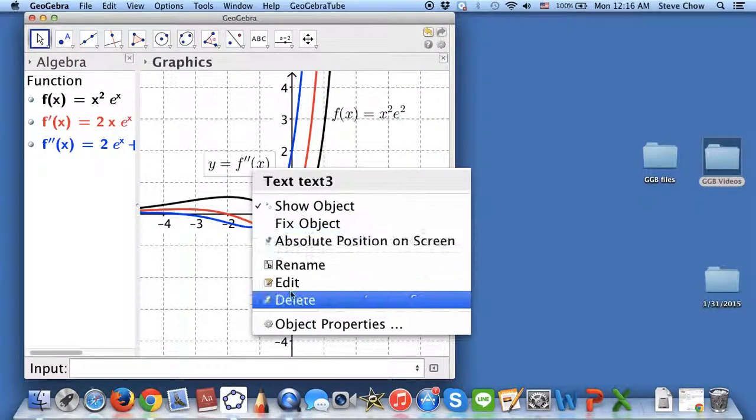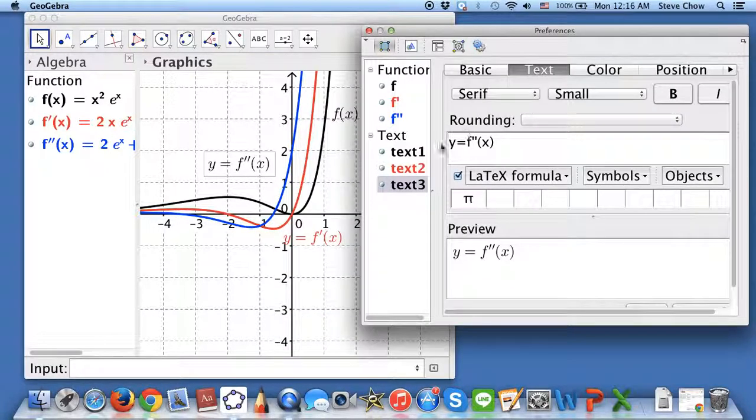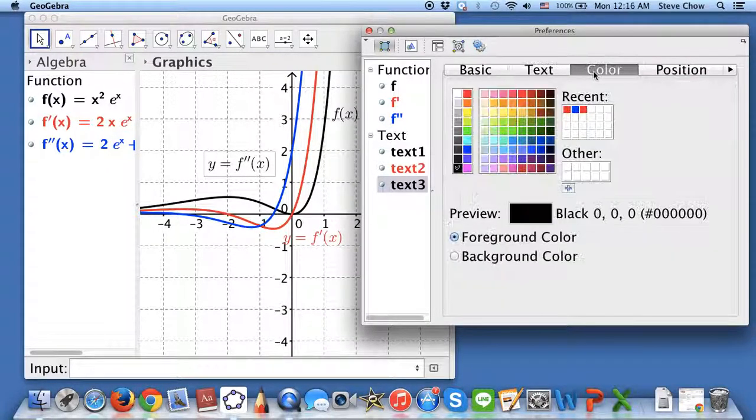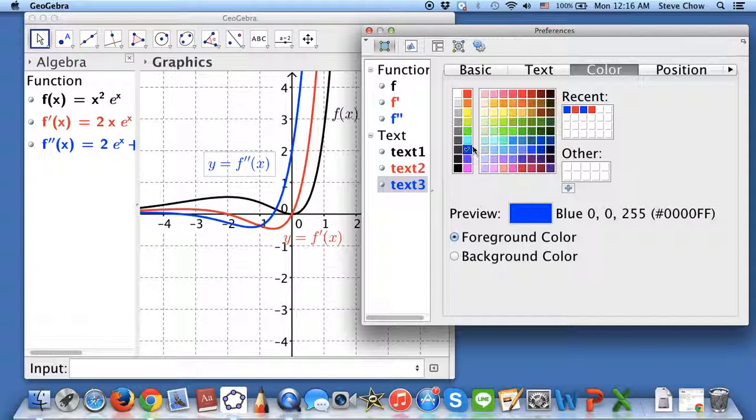And right click on this. Object property. And I'm just going to change this to blue. Okay. I think it's this blue.